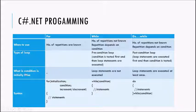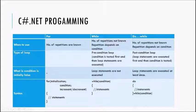What happens if the condition is initially false? In the case of the while loop, the loop statements are not executed because it checks the condition first — when the condition is false, it exits the loop. But in the case of the do-while loop, if the condition is initially false, it will still execute the loop statements and then check the condition. That means the loop statements are executed at least once.